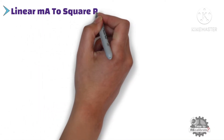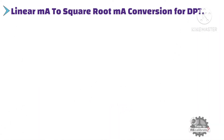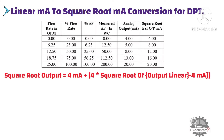Now, let's try to understand linear milliampere to square root milliampere conversion for a DP transmitter. As you can see, this is a standard formula to convert any linear milliampere signal to a square root milliampere signal. In this formula, you just need to put the linear milliampere value, and it will give the square root milliampere value corresponding to your linear milliampere signal.